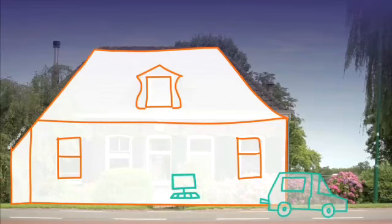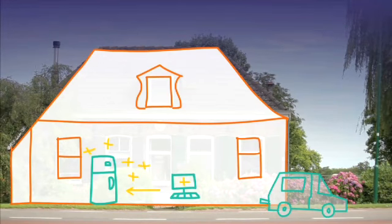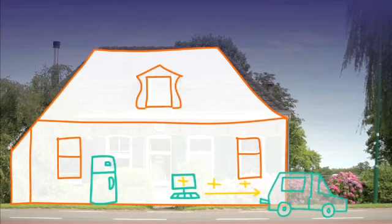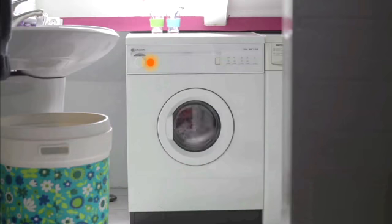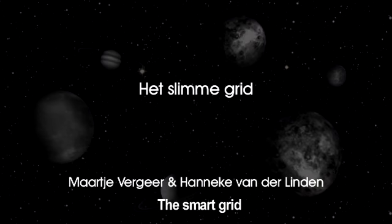This system can also make sure that in off-peak hours your fridge starts to work a bit harder, your electric car recharges its battery, and your washing machine starts running. All you have to do is make sure that it contains some dirty laundry.